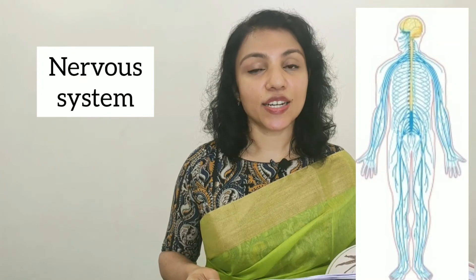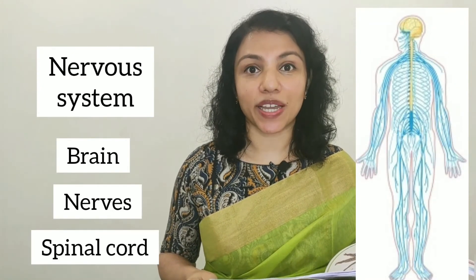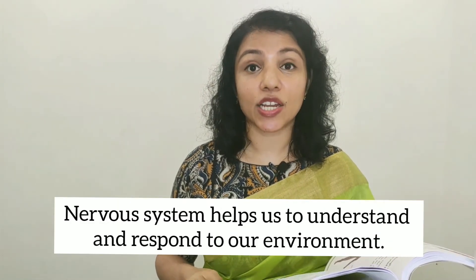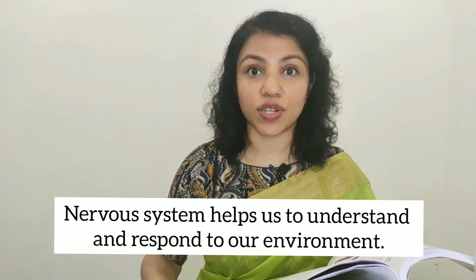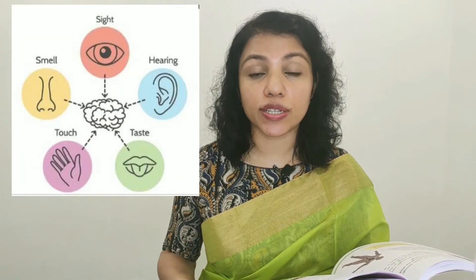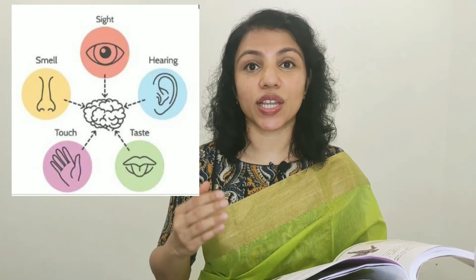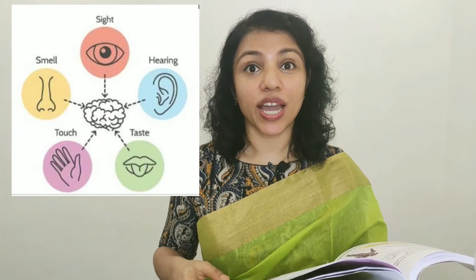Now let's look at the nervous system. The nervous system is formed by the brain, the nerves, and the spinal cord. These are very important parts of our body that help us understand and respond to what is around us. The nerves are connected to all our sense organs and send signals to the brain, which then sends signals to the muscles so we can move. The brain also helps us think and process information.